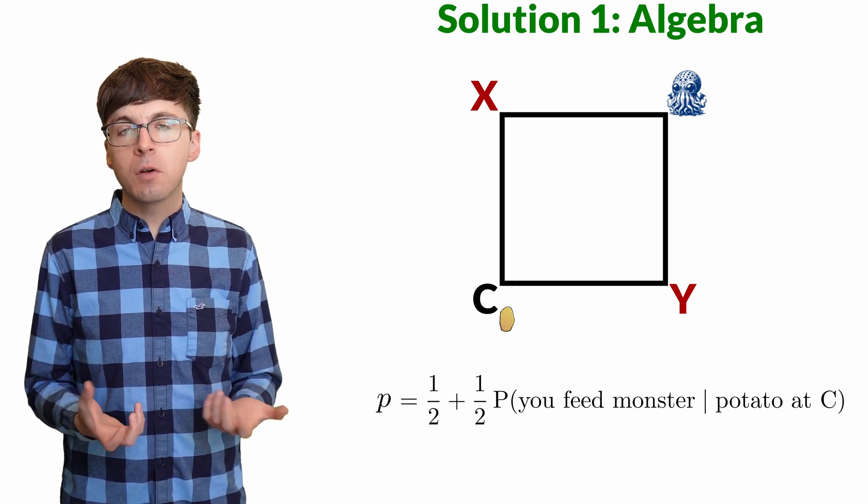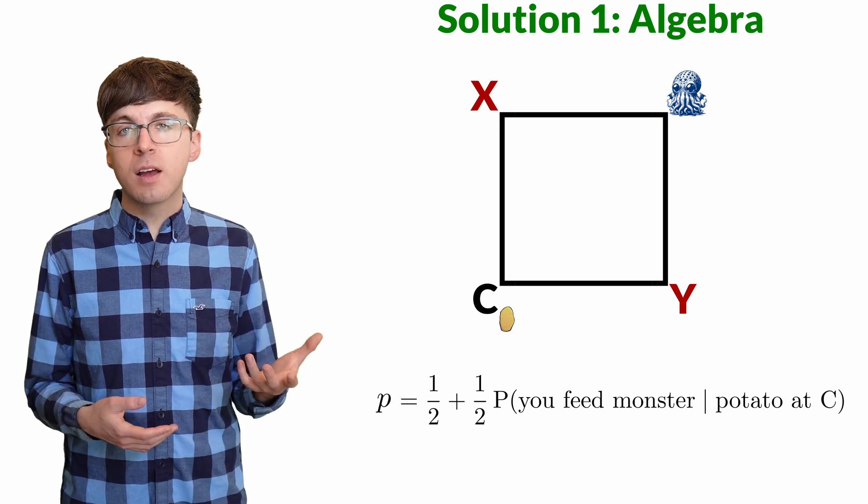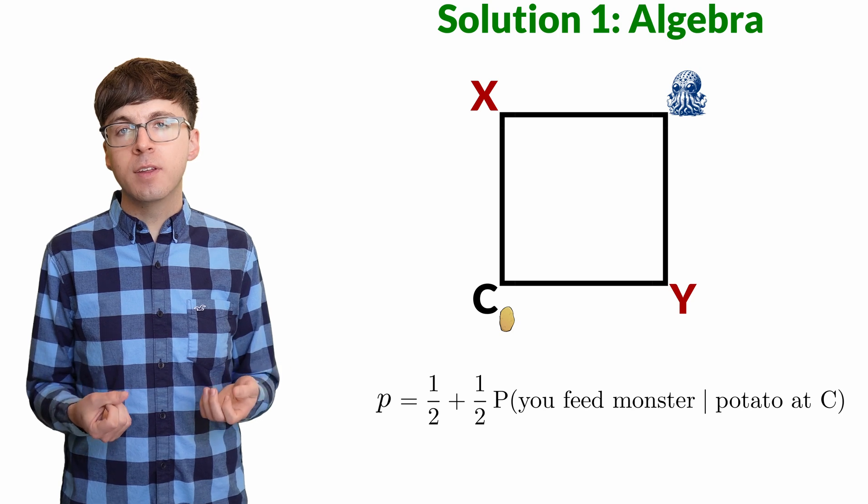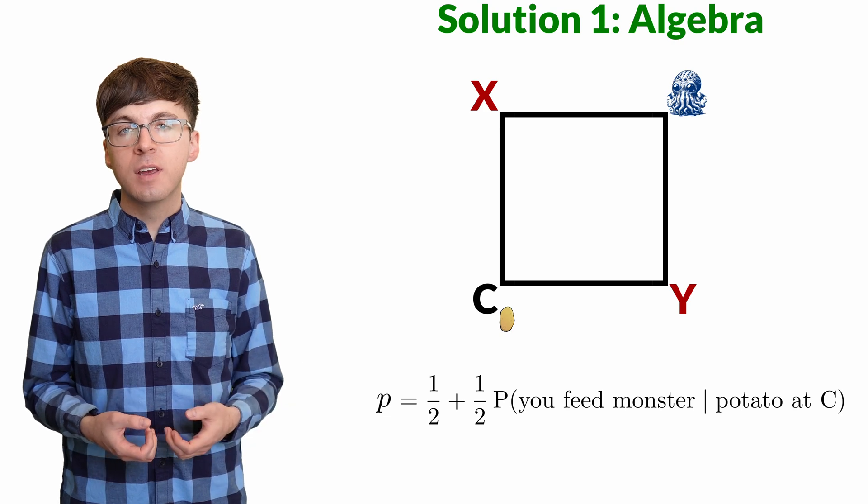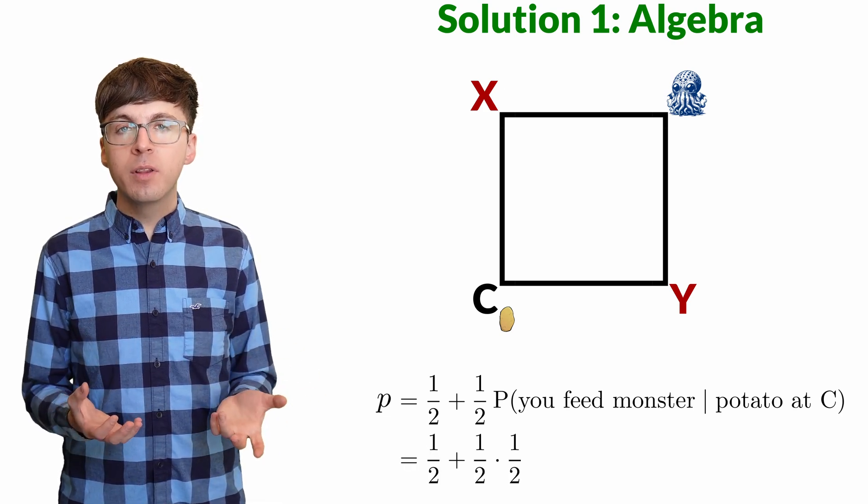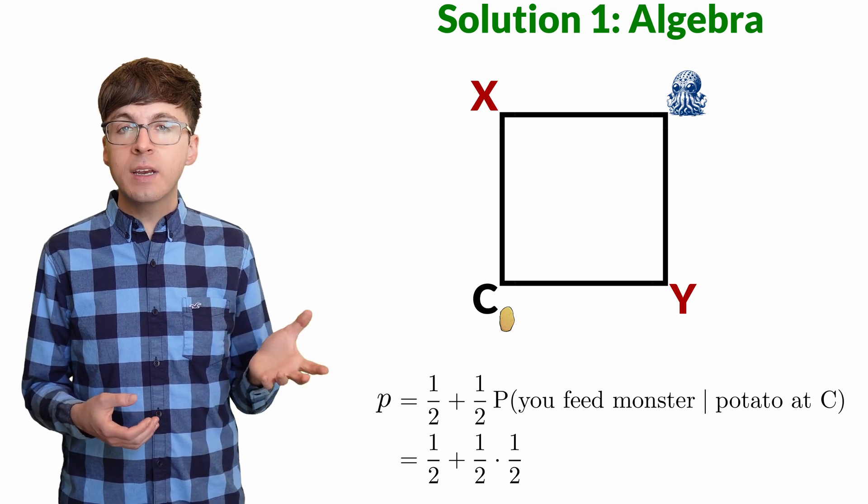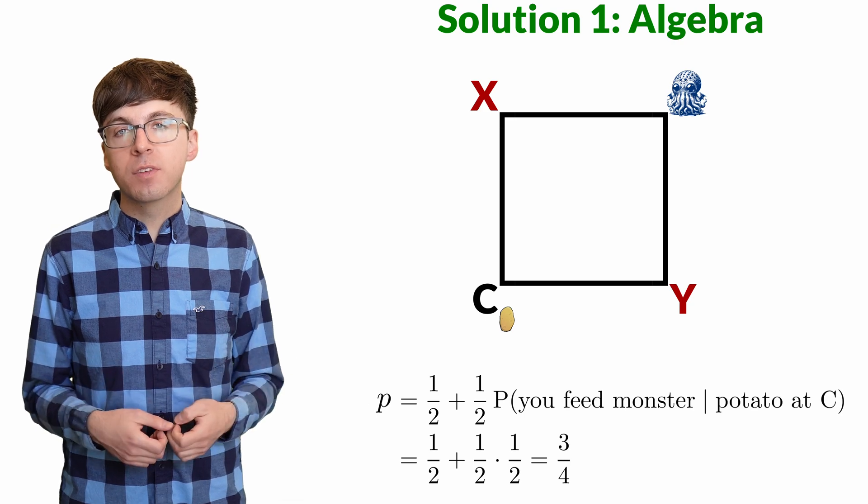Here's a key to solving this problem. From this position, the game is symmetrical for us and the other person who can feed the monster. So we have the same probability of feeding the monster from this position. The probability is one-half. So the overall probability that we feed the monster is one-half plus one-half times one-half, which is three-fourths.